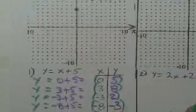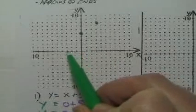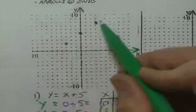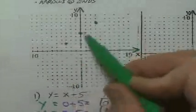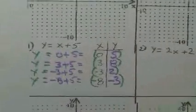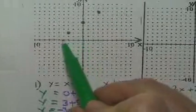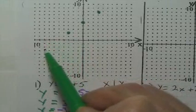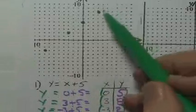Next point is negative 3, 2. So I'll go over 3 — 1, 2, 3 — negative 3 — and then up 2 — 1, 2. Already you can see the line being formed. And the last point is negative 8, negative 3. Negative 8: 1, 2, 3, 4, 5, 6, 7, 8, and then negative 3 — down 3 — 1, 2, 3. That's negative 8, negative 3. And notice that they all lined up.